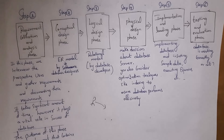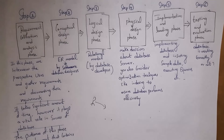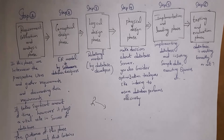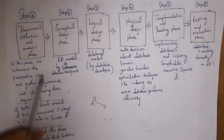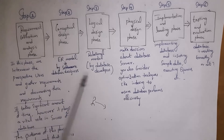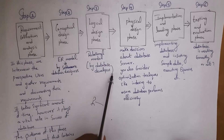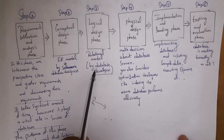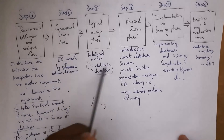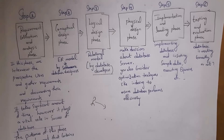Step three is the logical design phase. By looking at the ER diagrams, the database developer starts designing the relational model — that is, creating tables and establishing relationships between tables.